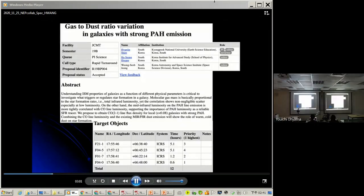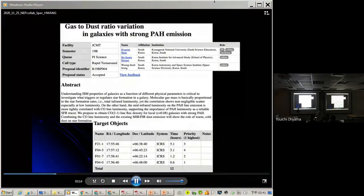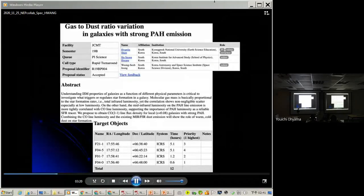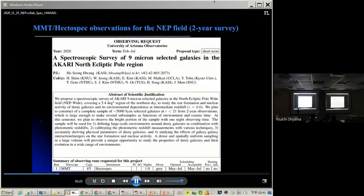So in that regard, I propose two things. The first one is the MMT/Hectospec permitted surveys, and then the second one is the JCMT CO survey. As for the JCMT CO survey, thanks to Professor Hing Nguyen-Sing from Taiwan University, she kind of led this CO survey with JCMT for some PAH-strong galaxies. The data analysis, I guess, is going on.